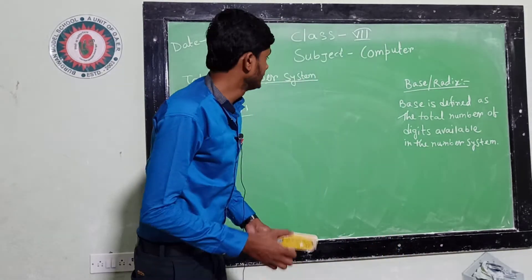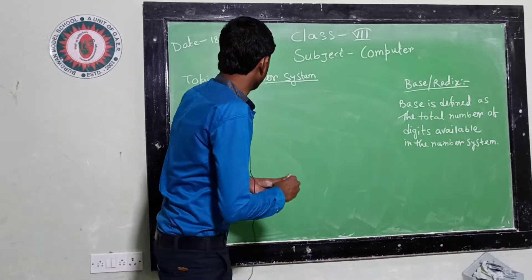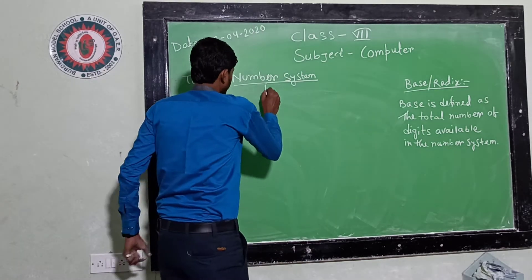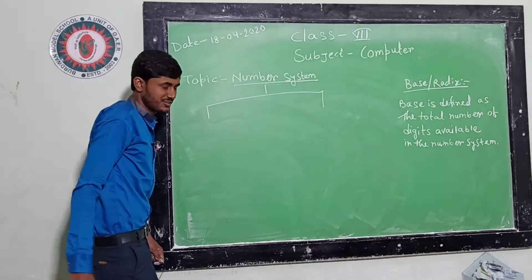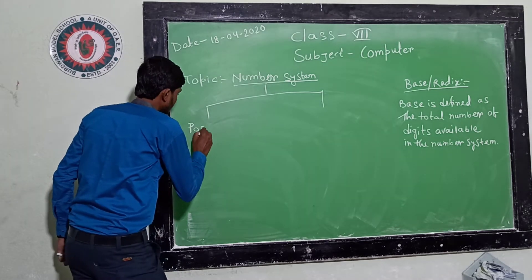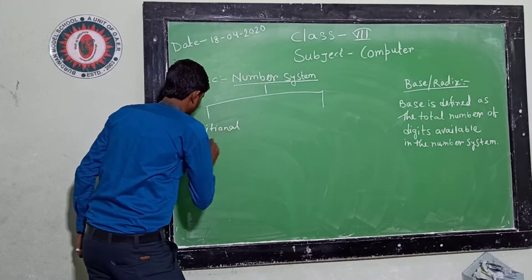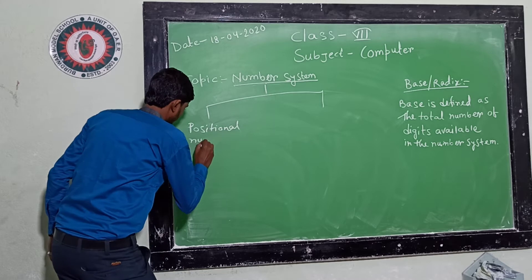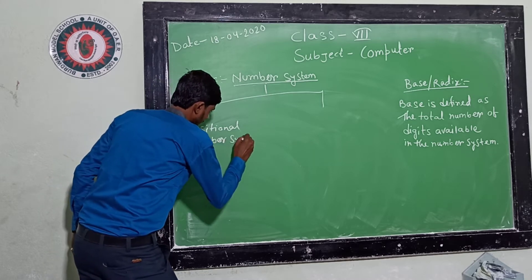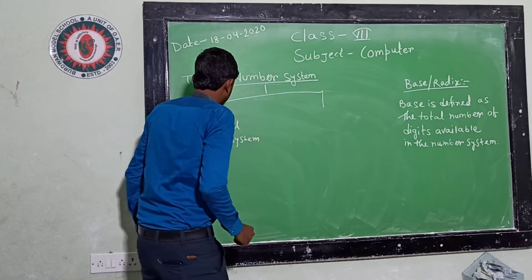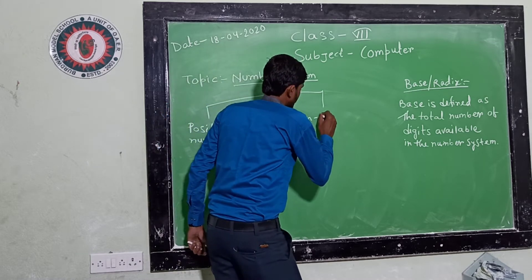In number system, there are two types of number systems. The first one is positional number system, and the next one is non-positional number system.